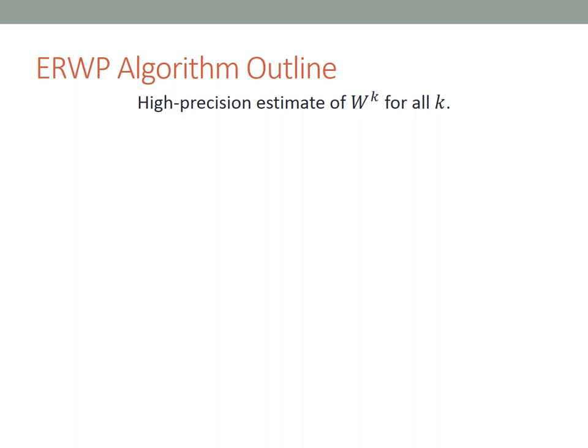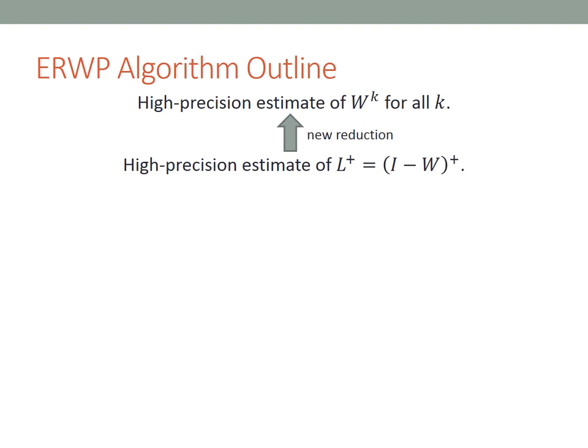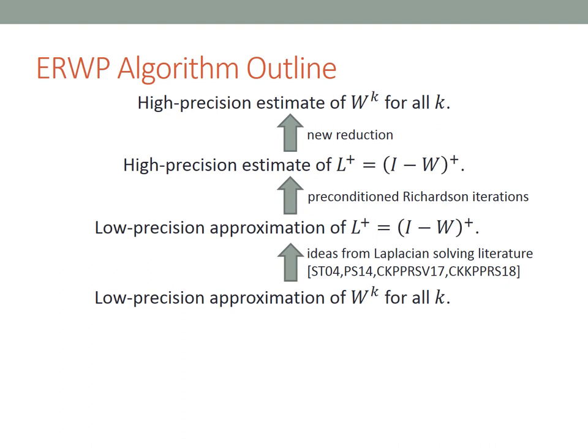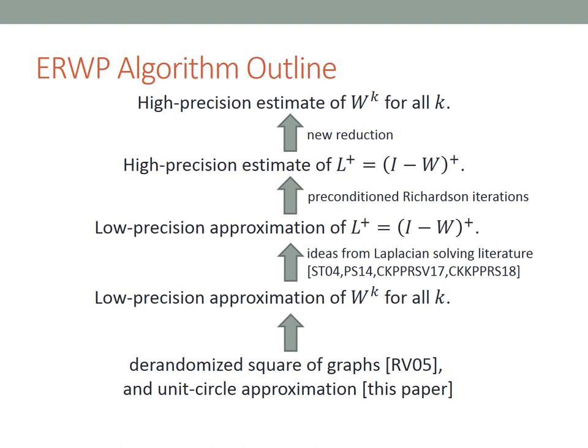The rest of the talk explains how we can estimate random walk probabilities to high precision in nearly logarithmic space, going in reverse order. We start from the end: how to get a high precision estimate of W to the K for all K, given a high precision estimate of the pseudo-inverse of a Laplacian matrix. Then we explain how to get that high precision estimate from a low precision approximation, using preconditioned Richardson iteration. Then how to get the low precision approximation from a low precision approximation of W to the K, and finally how to get that from scratch using the derandomized square of graphs.